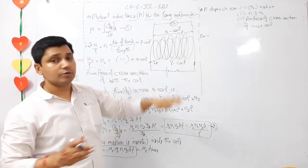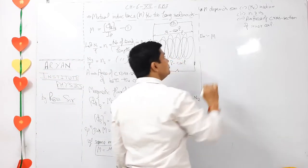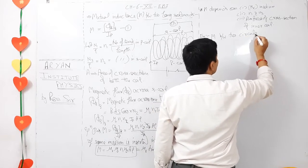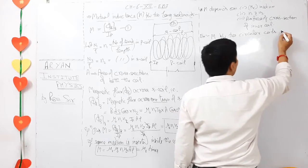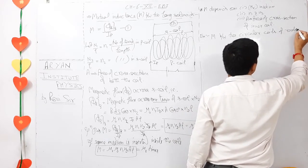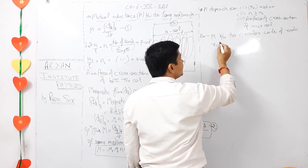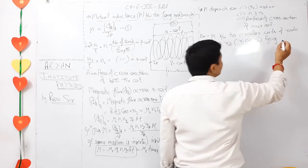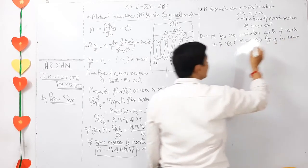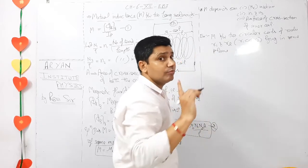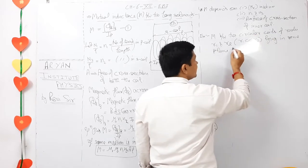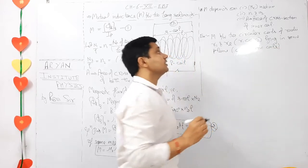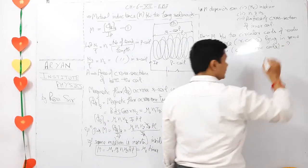Now, a board exam question: Find the mutual inductance M between two circular coils of radii R1 and R2, where R1 is much less than R2, lying in the same plane — they are concentric coils. This has been asked in board exams. Let the inner coil have radius R1 and the outer coil have radius R2.